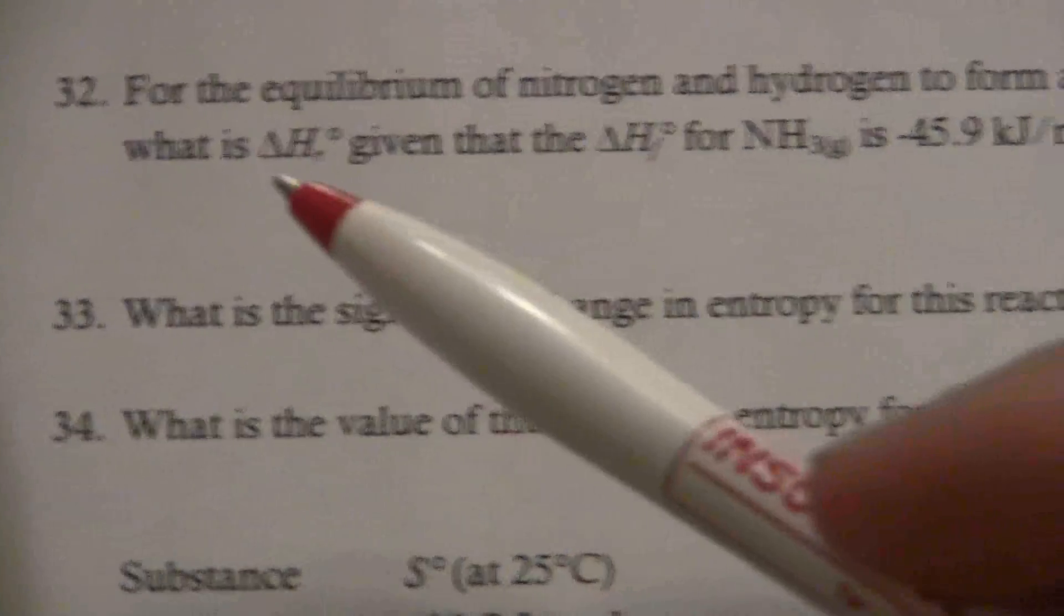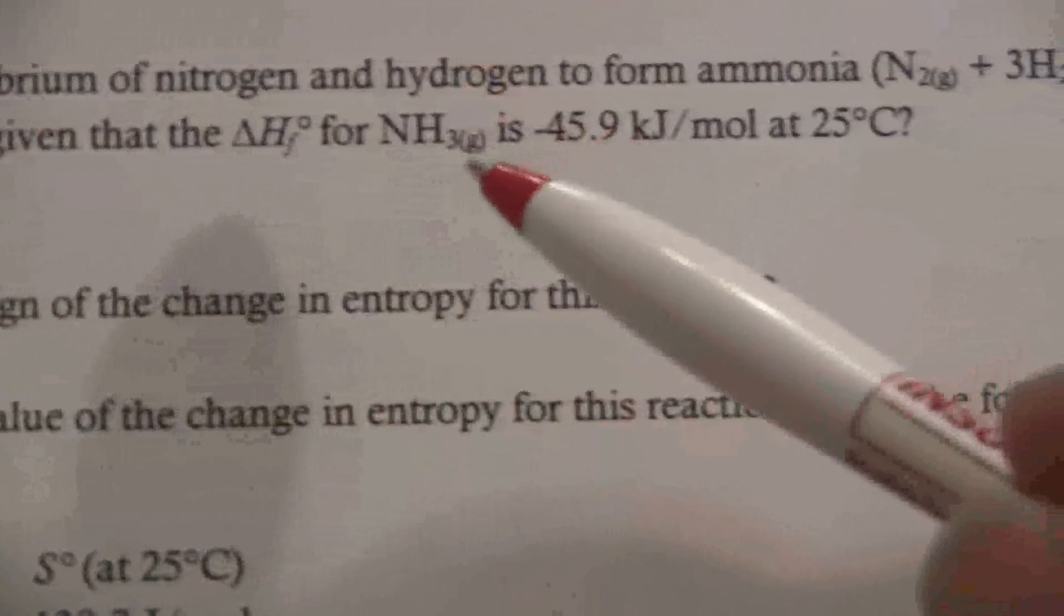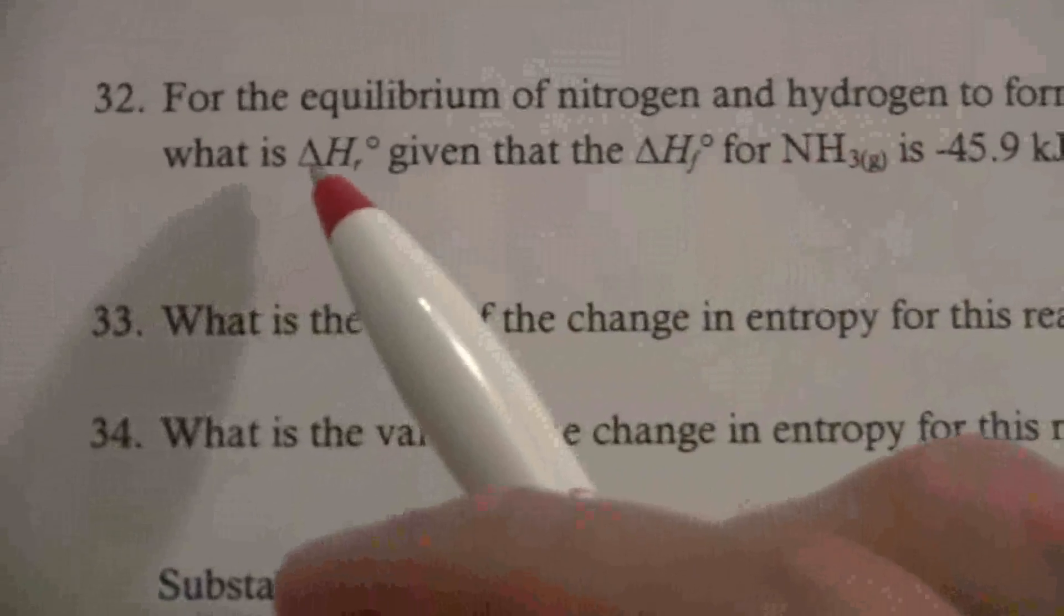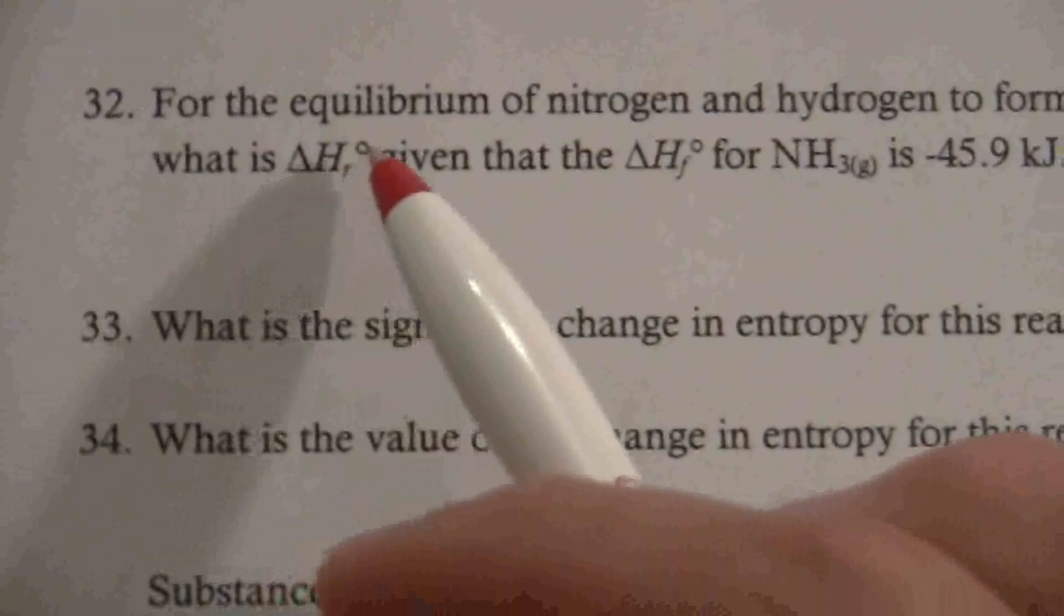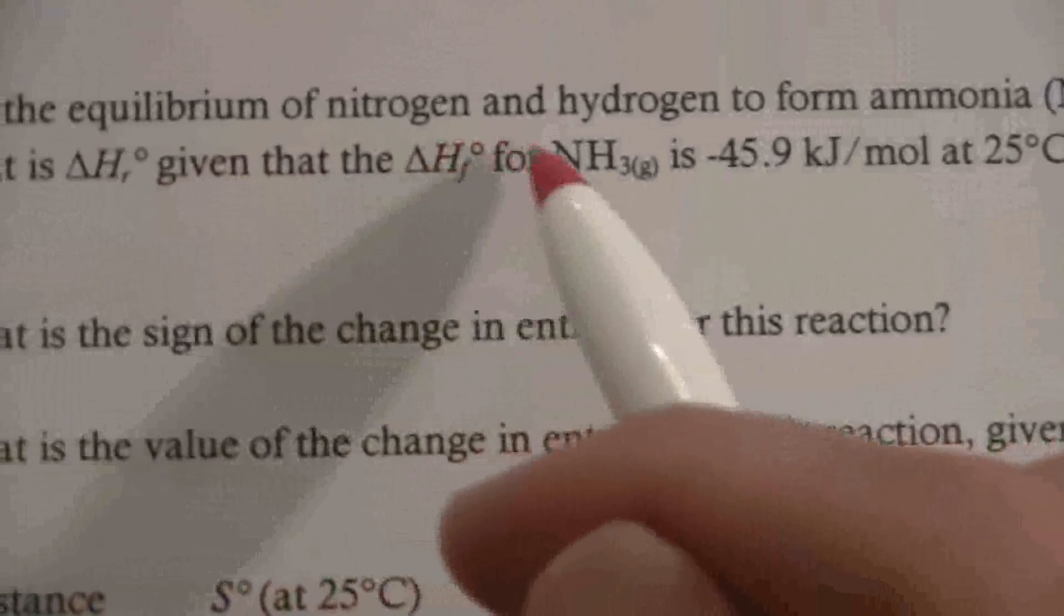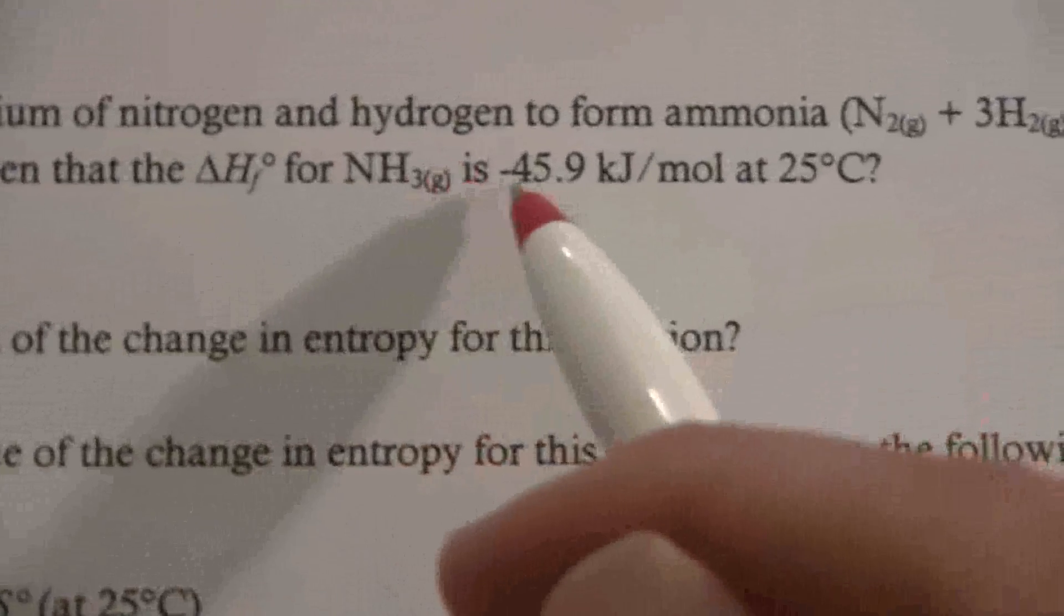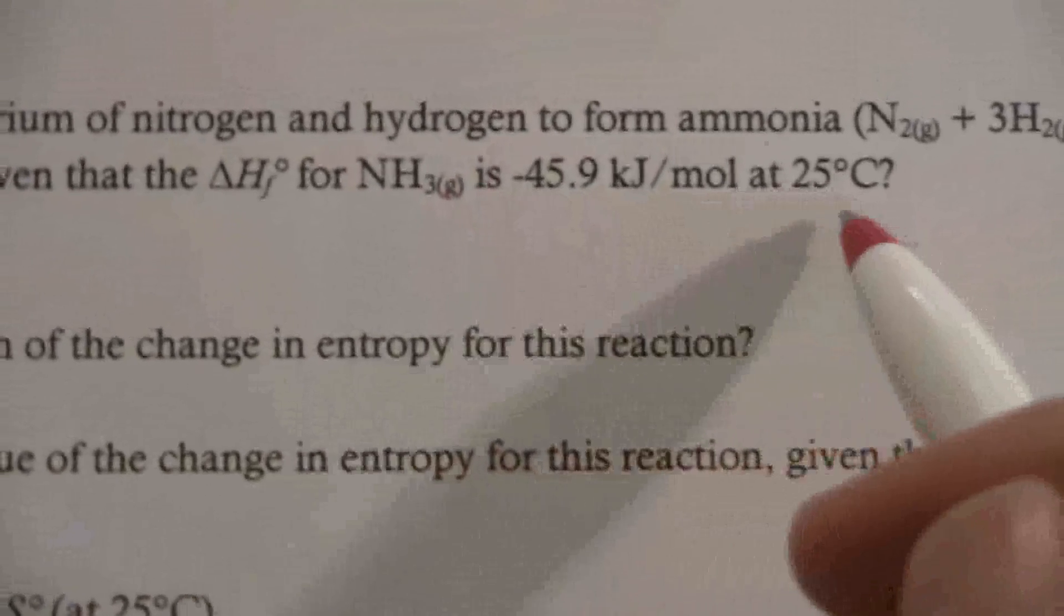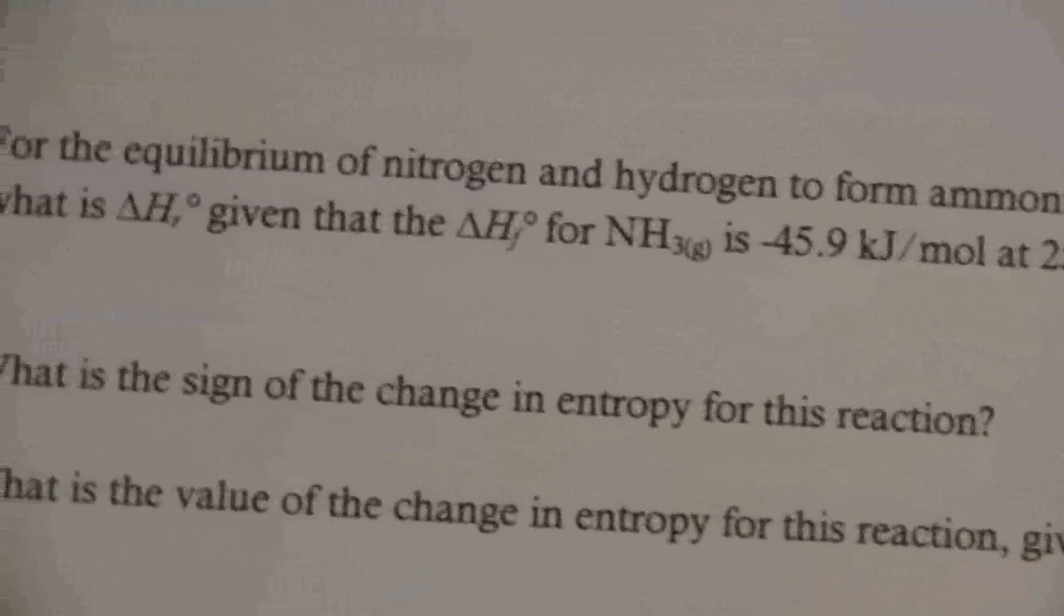Alright, so it says for the equilibrium of nitrogen and hydrogen to form ammonia, and there it is, what is the delta H for the reaction at standard conditions, given that the delta H of formation for ammonia is this, at 25 degrees.